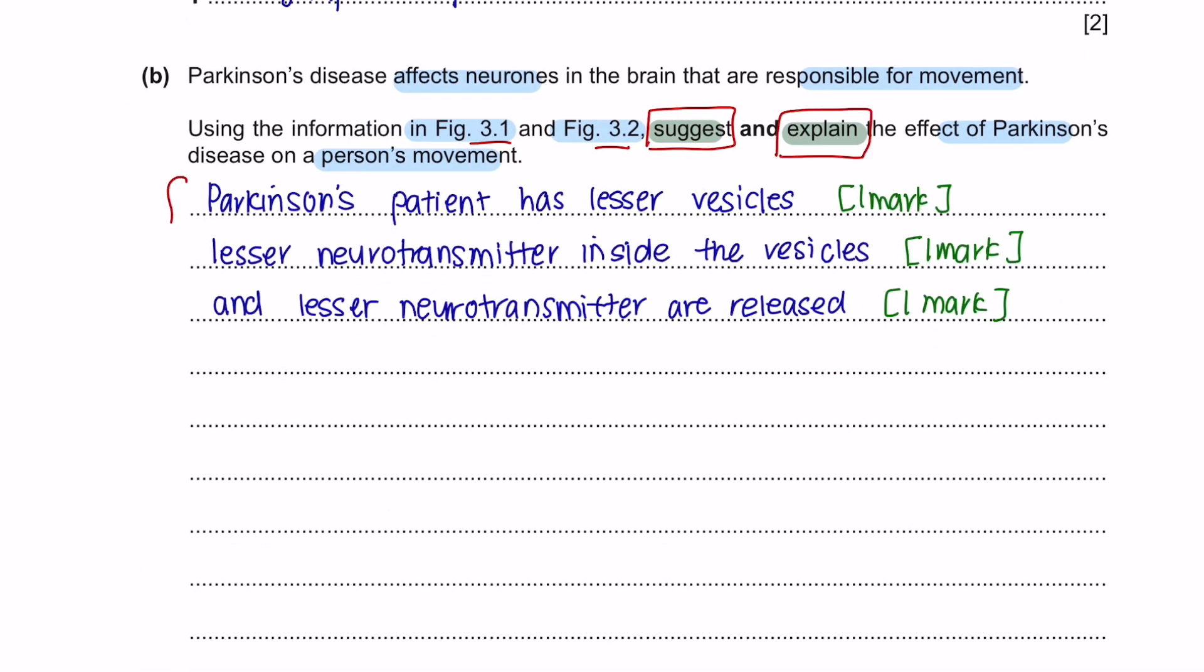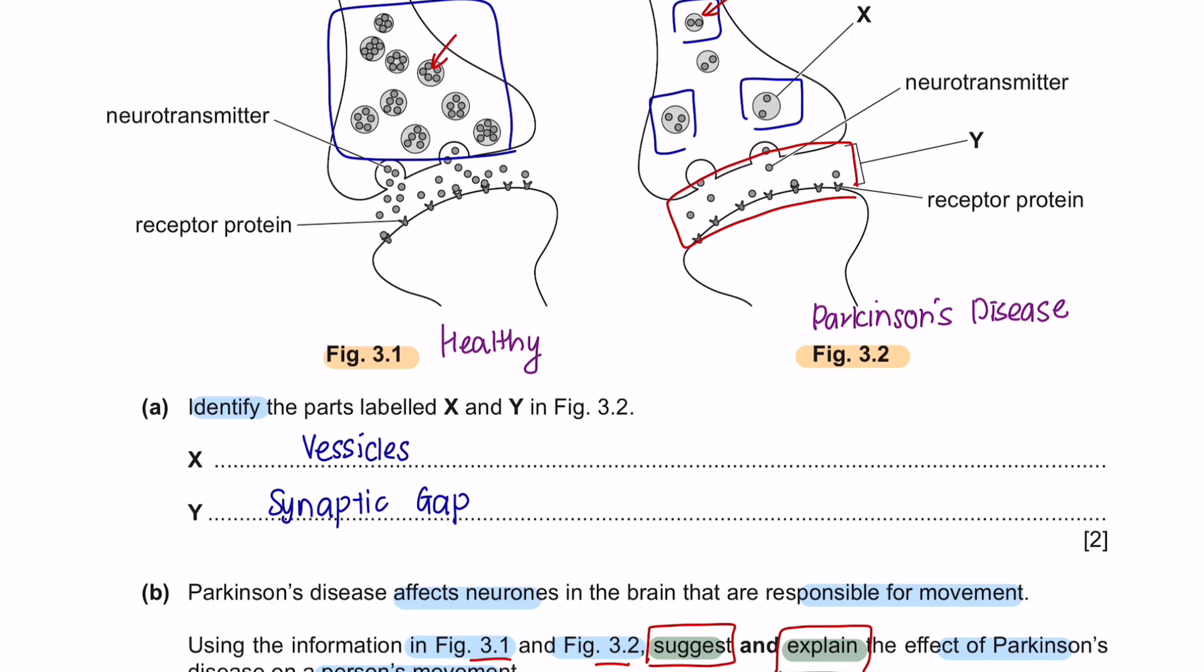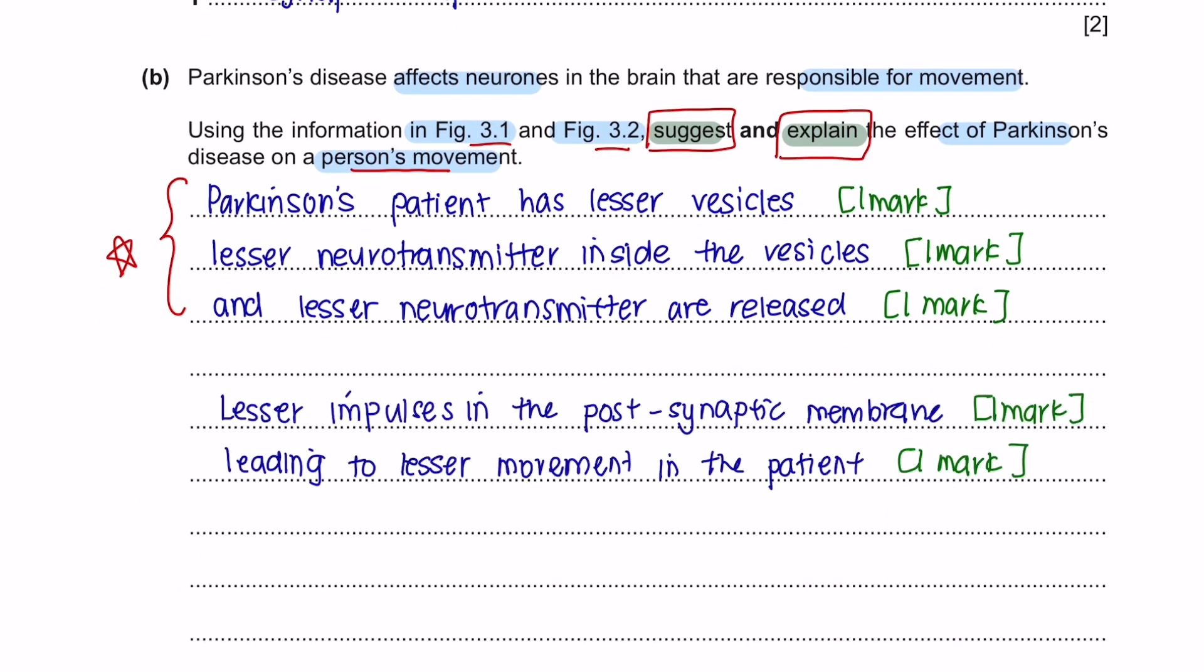So now we have to explain how this can affect a person's movement. If there are lesser neurotransmitters being released into the post-synaptic membrane, then there will be lesser impulse that is being sent. If lesser impulse are being sent, then this will lead to lesser movement. So this is how you answer a suggest and explain question.